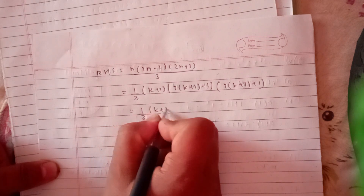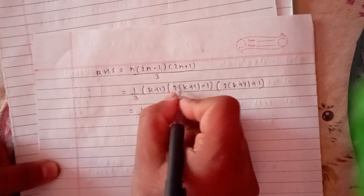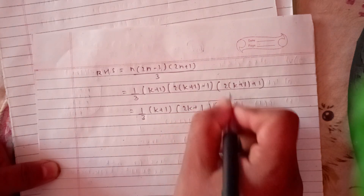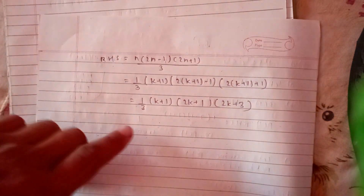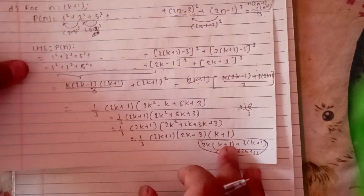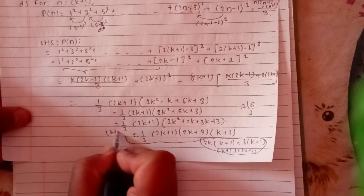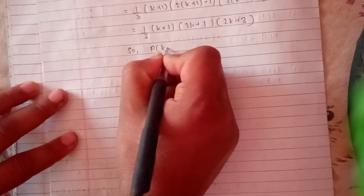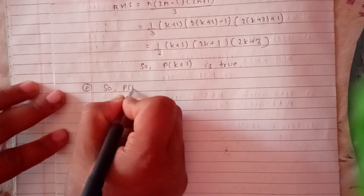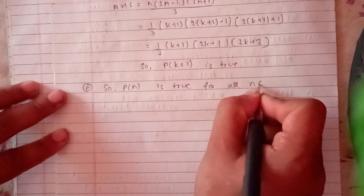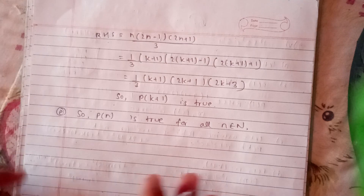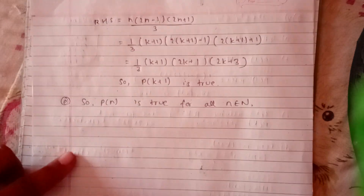We have 1 by 3 times (k plus 1), then (2k plus 2) is 2(k plus 1), and (2k plus 3) is 2(k plus 1) plus 1. So LHS equals RHS, which means P(k+1) is true. Therefore P(n) is true for all n belonging to natural numbers. This completes the proof by mathematical induction. I will give you more questions in another video.